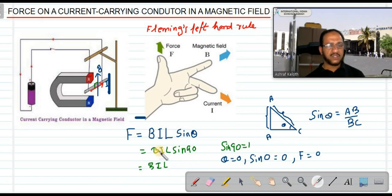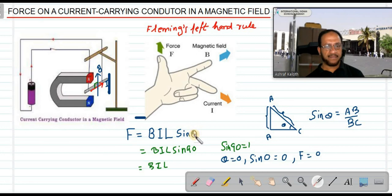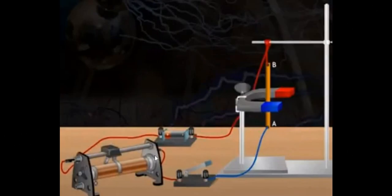So the force acting on the aluminium rod is given by F = BIL sinθ, where B is the strength of the magnetic field, I is the current, L is the length of the conductor, and θ is the angle between the direction of current and the direction of magnetic field. When θ = 90°, sin 90° = 1, so force is maximum. The magnitude is given by BIL sinθ and the direction is given by Fleming's Left Hand Rule.